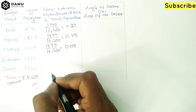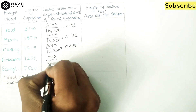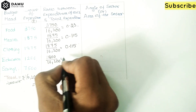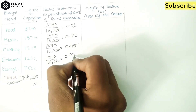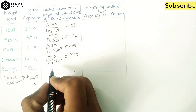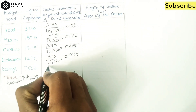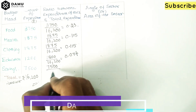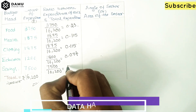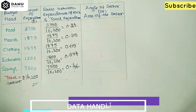For education: 1,200 divided by 16,200 gives approximately 0.074. For savings: 7,500 divided by 16,200 gives approximately 0.46. These are the ratios between each expenditure item and the total.